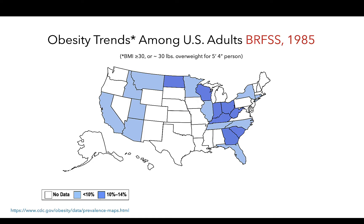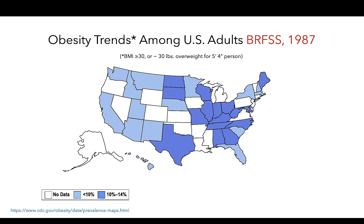Now we'll go through these data year by year to see how this map changes as we advance through time. You'll see the colors of states change as obesity data become available and as the prevalence of obesity changes in these states. So again, we start here in 1985 and we see some increase in 1986 in the number of states reporting obesity-related data. 1987 provides even more data from more states and some increases in the prevalence of obesity as indicated by more darker blue states.